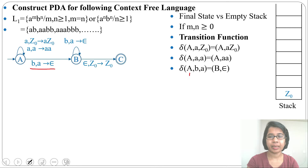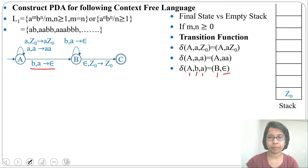Next: δ(a, b, a) = (b, ε) — state 'a', input 'b', topmost 'a', go to state 'b' and pop 'a' (replace with ε). This means we are popping 'a' when we see the first 'b'.